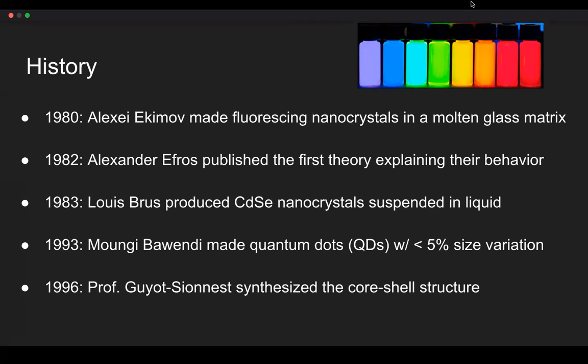A year later, Louis Bruss at Bell Labs produced cadmium selenide nanocrystals that were suspended in a liquid instead of a glass matrix. This made them easier to handle. From there, however, progress was slower. It took 10 years after that before we were able to achieve quantum dot synthesis with relative control of size, less than 5% in variation. In 1993, Mungi Bawendi achieved this milestone, which was very crucial in order to tune one of the key properties of quantum dots and achieve the fluorescing wavelength that was desired, as opposed to just whatever was synthesized.